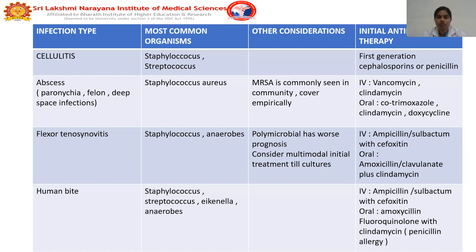For flexor tenosynovitis, common organisms include Staphylococcus and anaerobic organisms. Polymicrobial origin carries a worse prognosis. IV ampicillin-sulbactam or oral amoxicillin-clavulanate plus clindamycin is given.